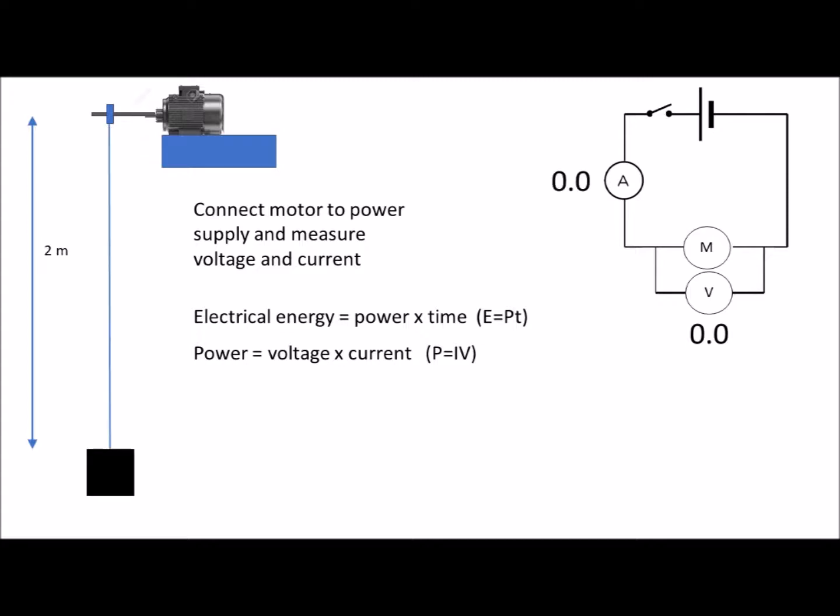Now we're going to repeat the experiment, and we're going to use a heavier weight. So again, flip the switch on, up we go. You can already see this time the weight is being lifted more slowly. Also we've got a different current. Record all the information, and we'll present that in a table.